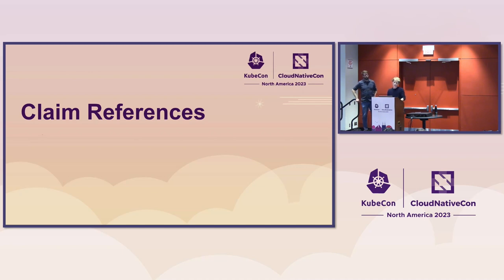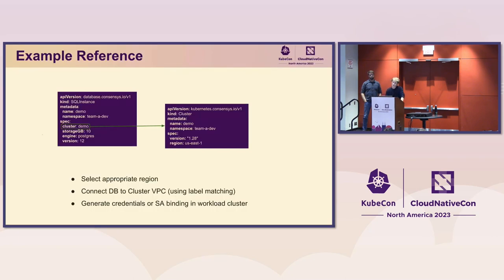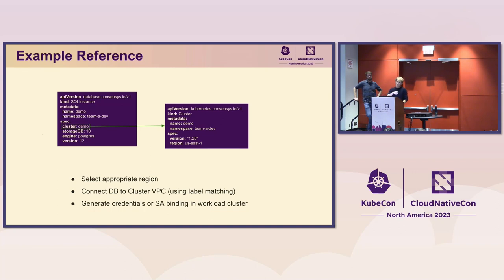Now let's talk about the second feature we implemented: claim reference. If I created a cluster and now want to create a database and connect it to the cluster, the SQL instance claim has a cluster field whose value is the metadata name of the corresponding cluster to connect. The composition selects the appropriate region based on the cluster, connects the DB to the cluster VPC using label matching, and finally generates credentials or a service account binding in the workload cluster so applications can access the database.